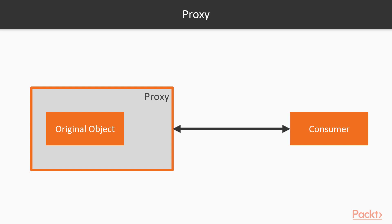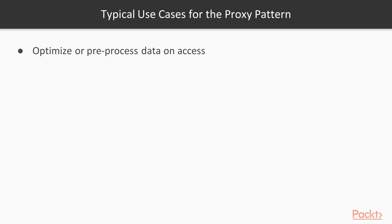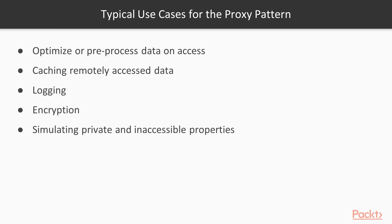When the consumer requests access to the object, it does so through the proxy, and the proxy then governs and modifies the data as needed by acting as a wrapper. Typically, you would use this pattern when you need to optimize or pre-process data when the consumer accesses it. This could involve caching remotely accessed data, writing loggers, encrypting data, simulating private and inaccessible properties, and validation, among other things.